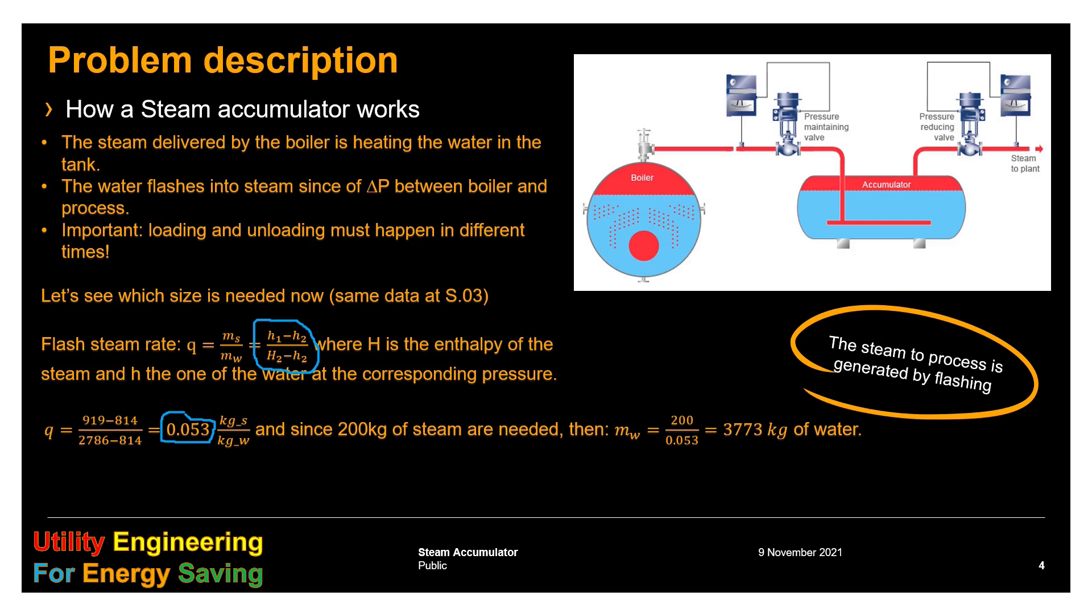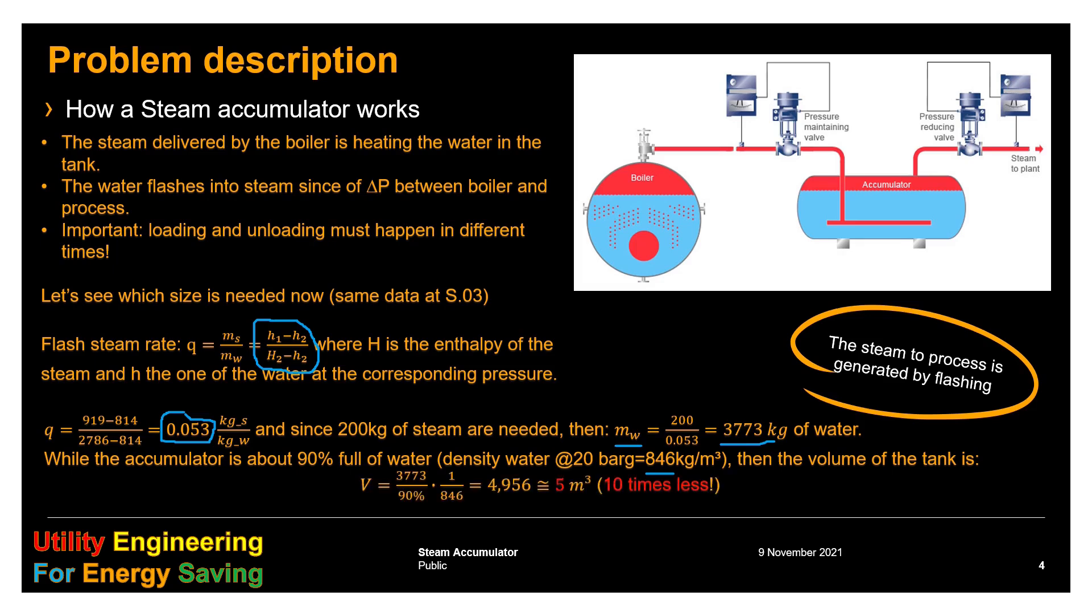Since 200 kg of steam are needed, the corresponding mass of water is 200 divided by this ratio, which is 3773 kg of water. While the accumulator is about 90% full of water, and the density of water at 20 bar is 846 kg per cubic meter, then the volume of the tank is the value we calculated divided by 90% and divided by the density, which is 5 cubic meters. That is 10 times less.